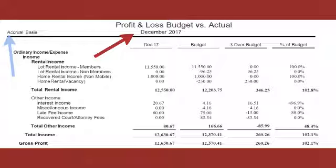Home rental income — maybe they have a stick-built home they rent out. Looking pretty standard here. The only thing is they have a little bit of a low late fee income. I can see that by looking at the percent of budget column and seeing that we only brought in 80 percent of what we anticipated. But then I see that's only fifteen dollars.